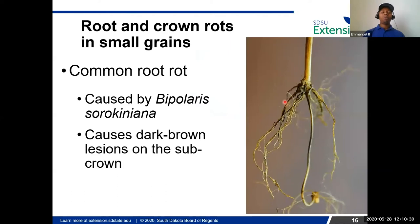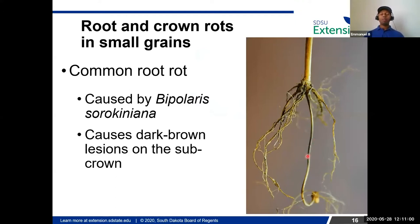In small grains, root and crown rots are also issues. The first is common root rot, caused by the fungal pathogen Bipolaris sorokiniana. The typical symptom is discoloration of the sub-crown area of the plant. When you pull a plant and see this area discolored, that's likely common root rot. The roots may remain healthy, but sometimes roots also rot as a result.